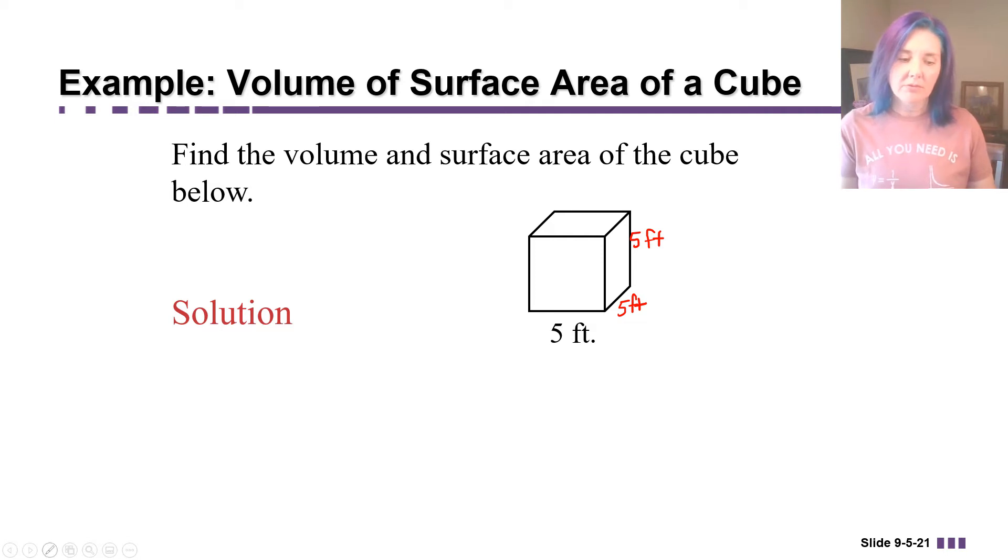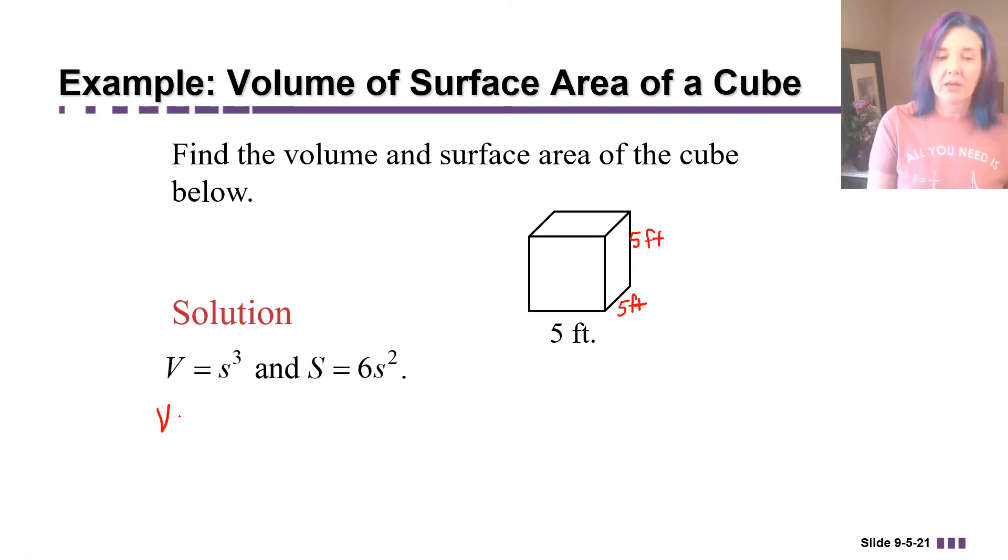So we're going to use the formula for the volume of a cube. You could use the formula for the volume of a box, length times width times height, it's going to work out the same. But in the case of a cube, all we have to do is take that one dimension five and cube it, raise it to the third power. So the volume is going to be five to the third power, which is going to be 125 cubic units, in this case cubic feet. So there's the volume of that cube.